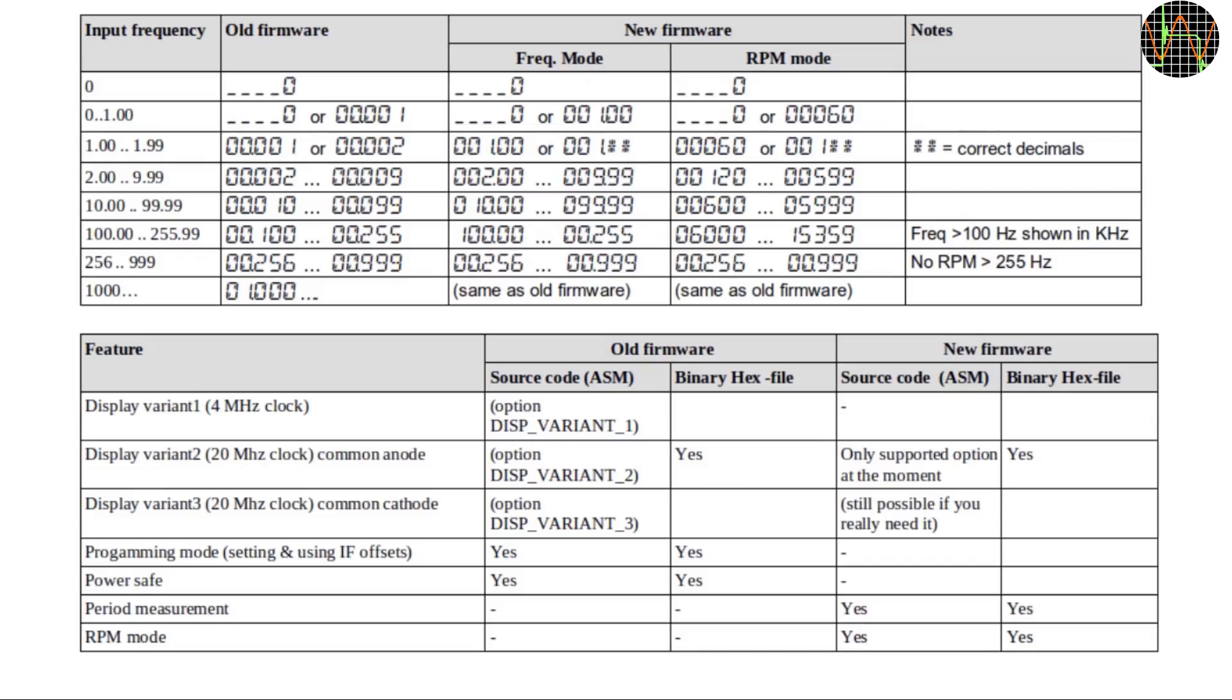Last not least, I want to show these two tables. The first one shows how the old firmware and the new firmware behave for frequencies from 0 to 256 Hz. For anything above 256, the two firmware versions behave the same. I just want to point out that frequencies will switch from the old format for frequencies above 100 and RPM will simply switch to frequency display above 15359 RPM. It will automatically switch back to RPM if the frequency falls back into the RPM range.